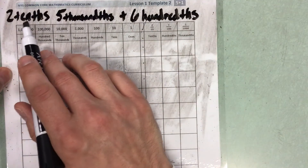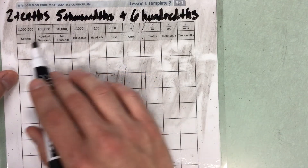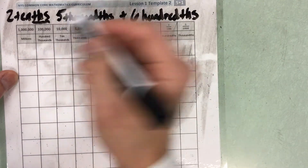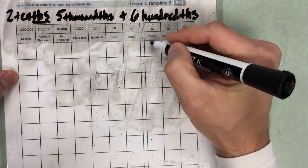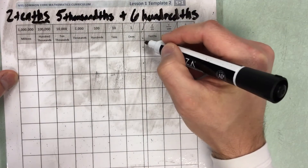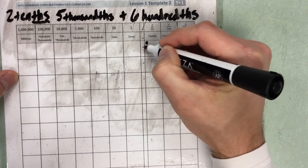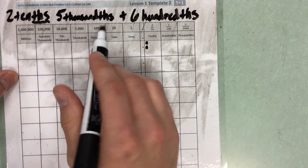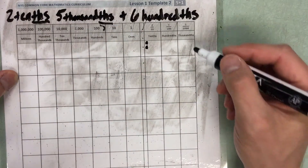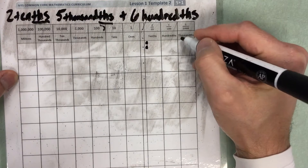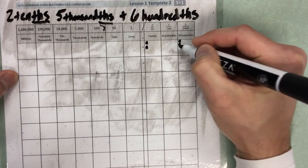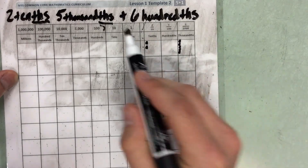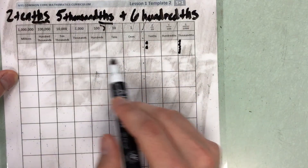Alright, I'm going to start with my 2 tenths, 5 thousandths, and I'm going to use this row up here. So I need to find the tenths column, which is one place to the right of the decimal, and I'm going to put 2 tenths. Then I'm going to look for 5 thousandths — that's back here, so I'm going to put 5 dots to represent 5 thousandths. So that's my first number.